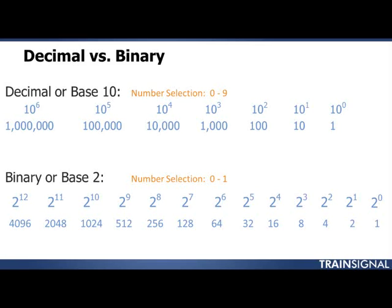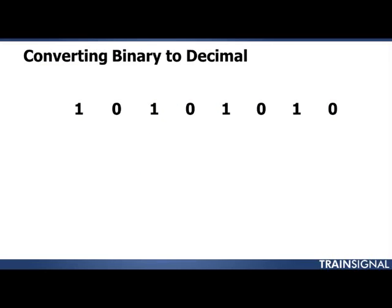Knowing these column values is very important because we're going to learn how to convert between binary and decimal. The first direction is binary to decimal, meaning you start with a binary number. The example on the screen is 10101010 in binary, and I want to convert that to decimal. The first thing I need to do is write down my column values: 1, 2, 4, 8, 16, 32, 64, 128. Then I line up my 1s and 0s under those column values.